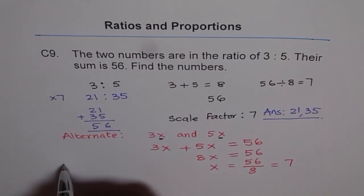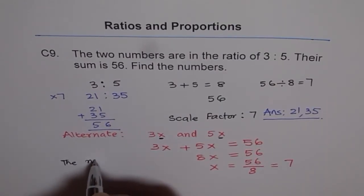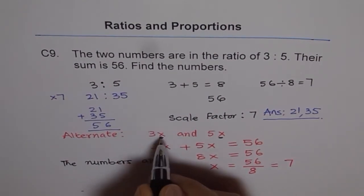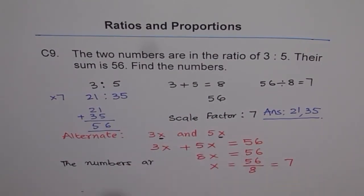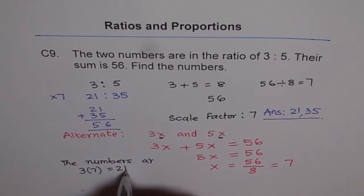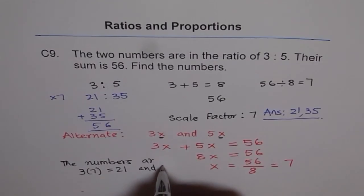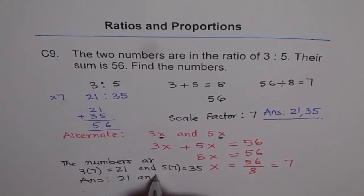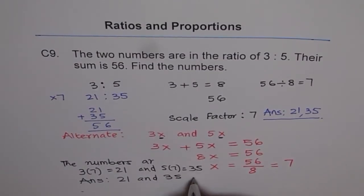The numbers are 3 times 7 and 5 times 7. 3 times 7 which is 21 and 5 times 7 which is 35. And therefore we get our answer as 21 and 35 are the numbers.